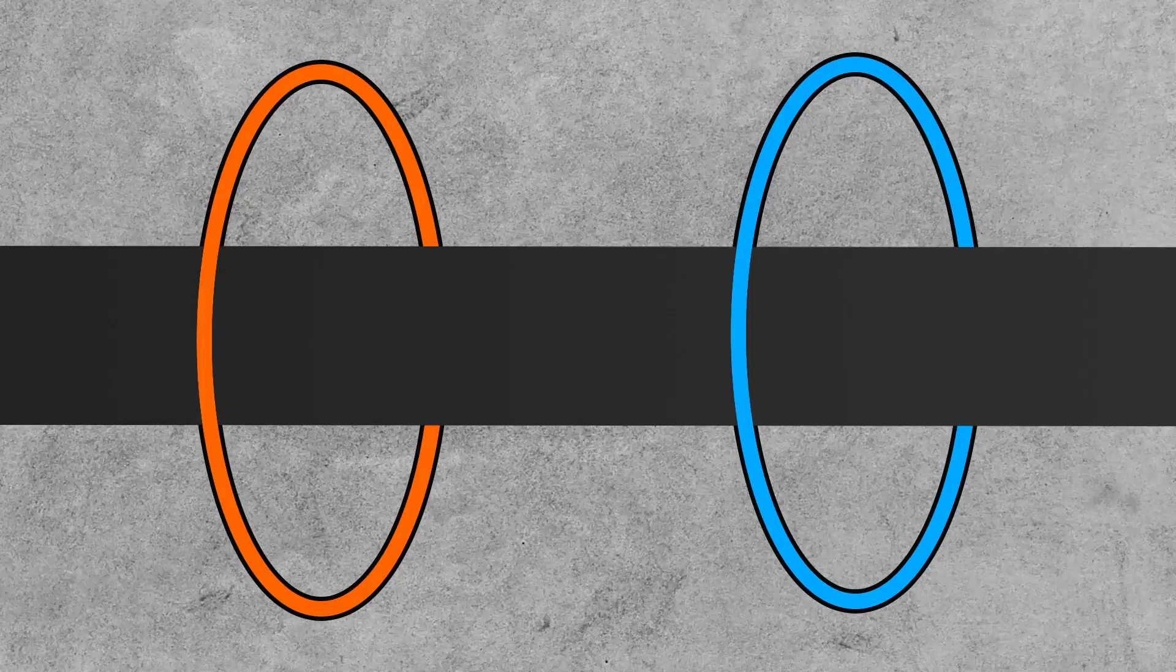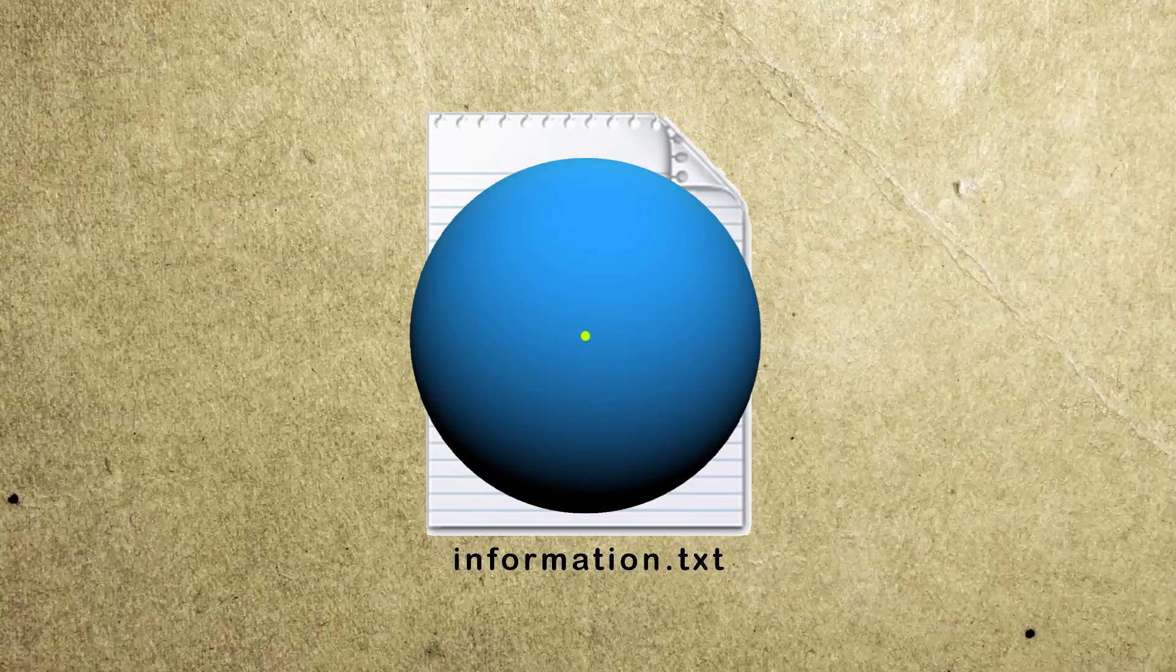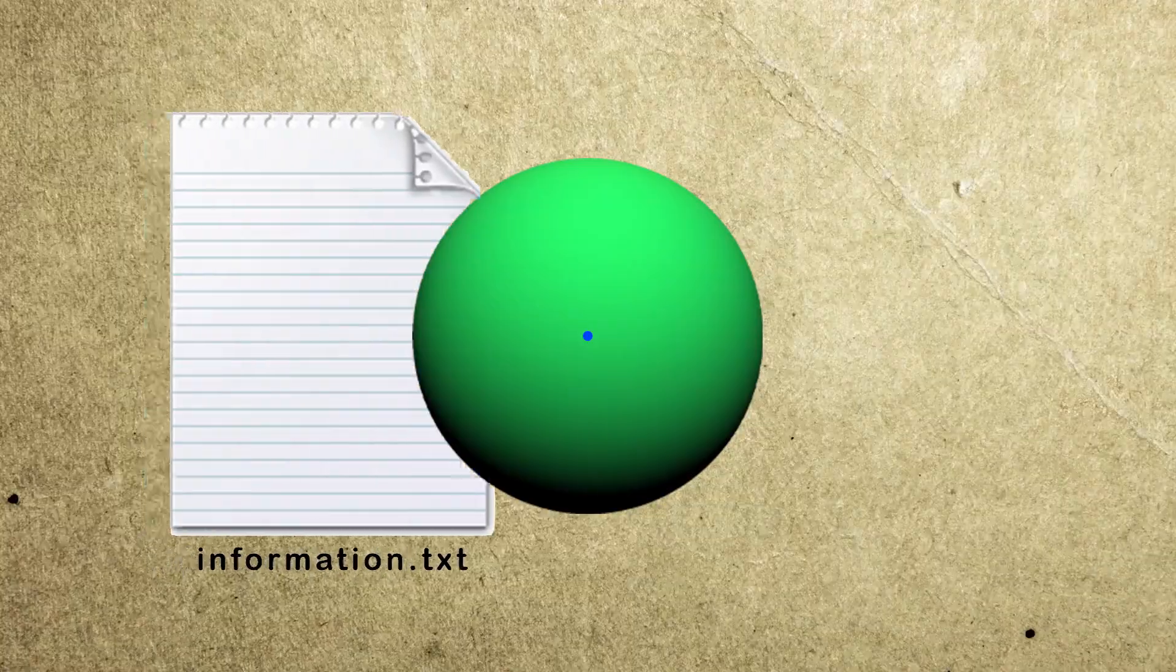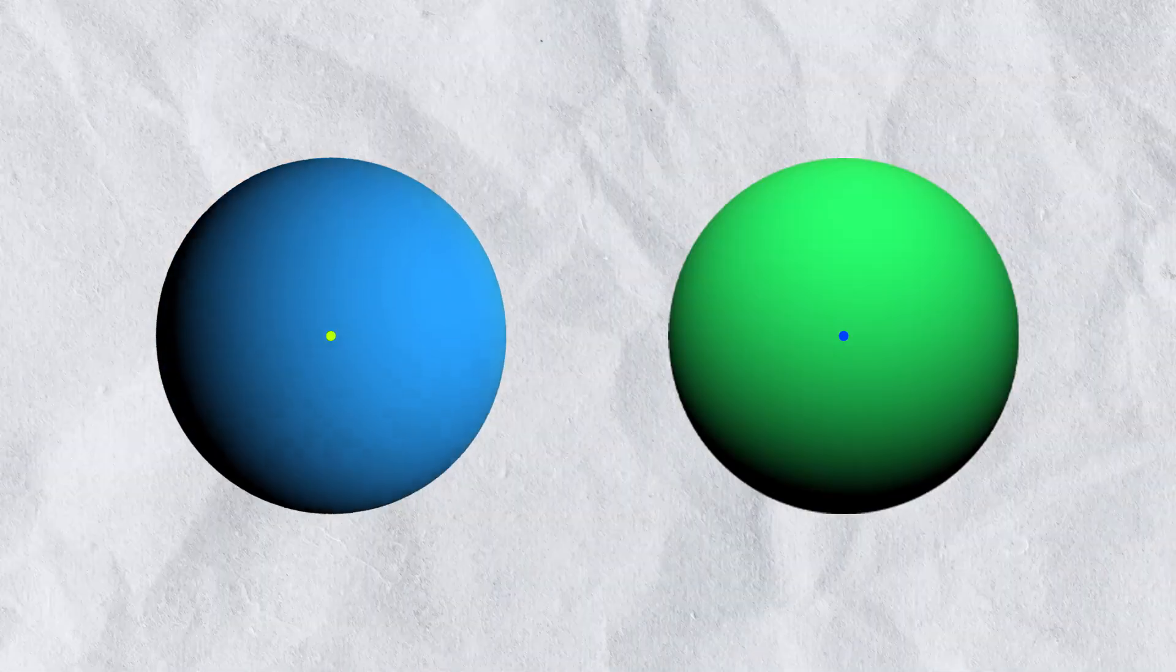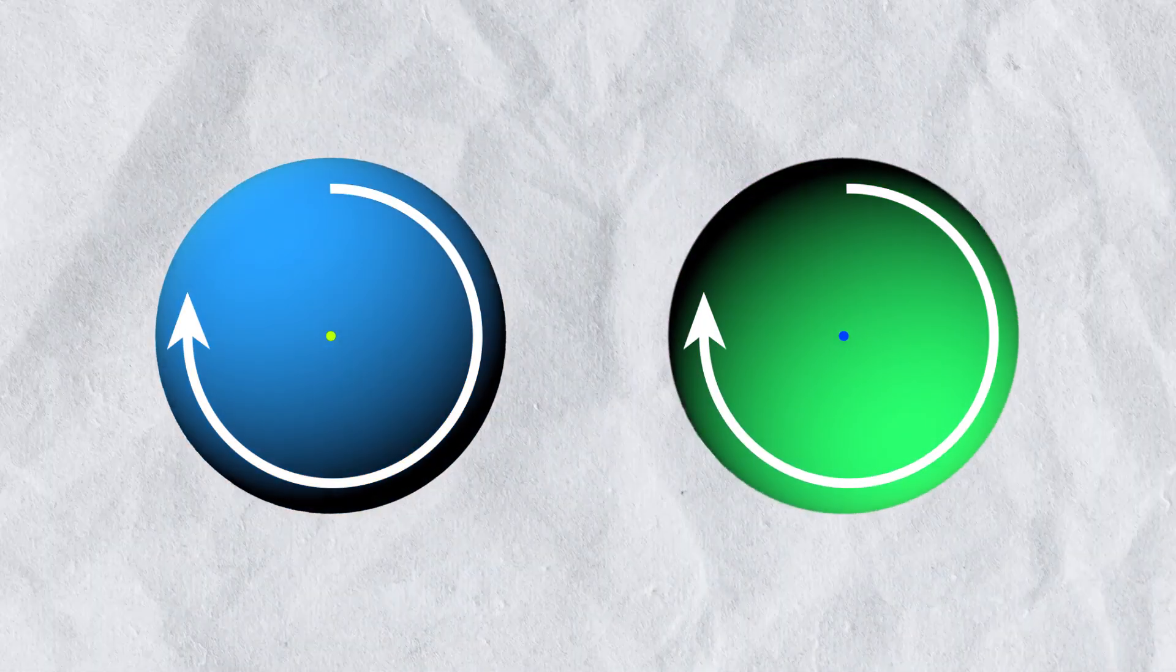This doesn't mean the first particle will disappear and reappear at a second location. That only means its quantum information will be sent and received by the second particle. Like if the first particle was spinning clockwise, the second particle will start spinning clockwise too.